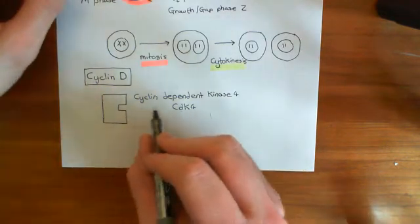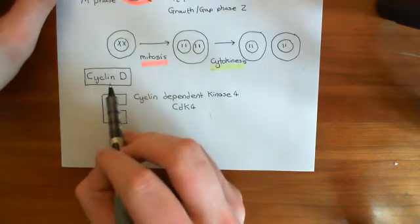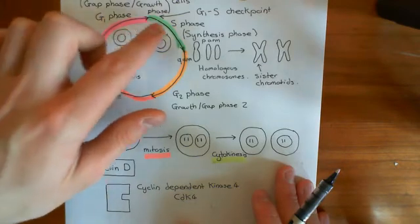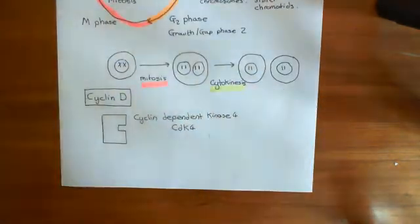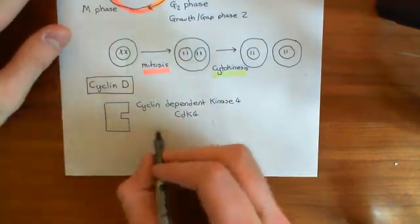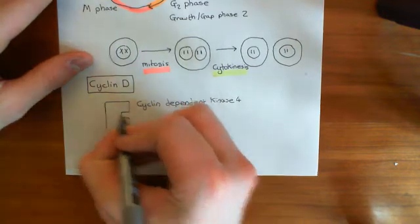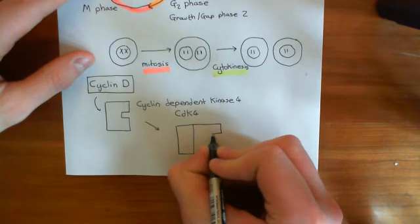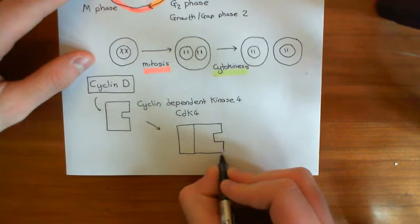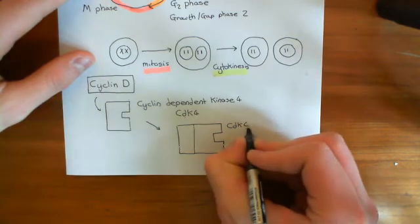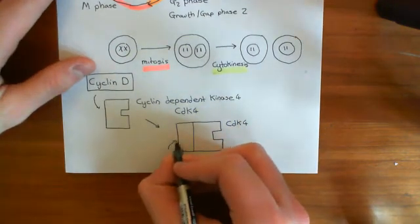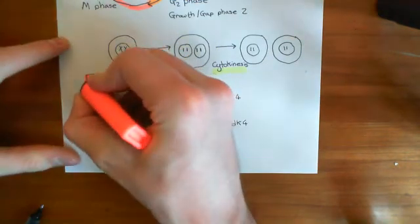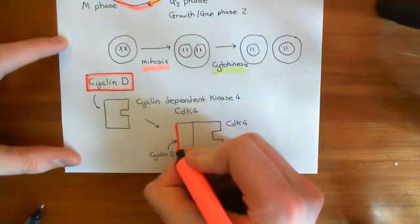When the cell is not dividing, cyclin-dependent kinase 4 is inactive because it doesn't have cyclin D bound to it. But when you want to go through the G1/S checkpoint and start copying your DNA, you need to produce cyclin D. Cyclin D will then bind to cyclin-dependent kinase 4, which activates it and will lead to changes in the cell that push you into copying your DNA. This is cyclin D, shown here in pink, now bound to CDK4.